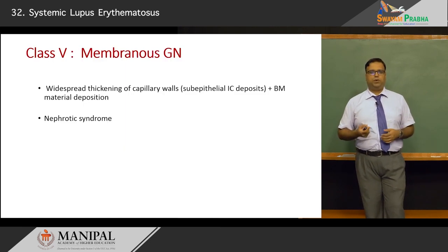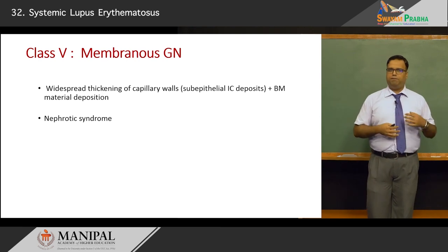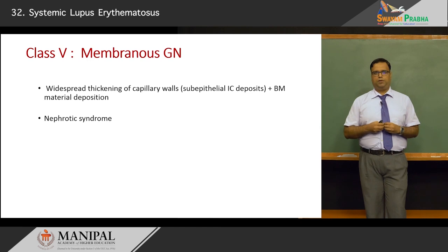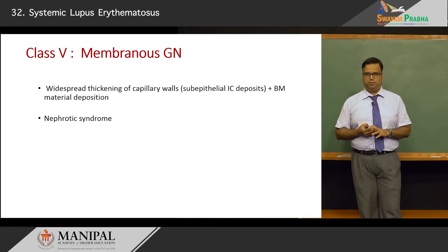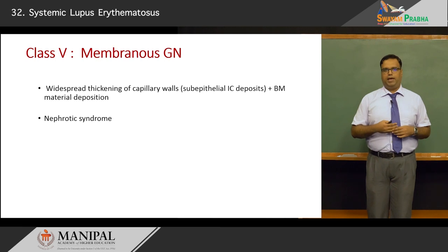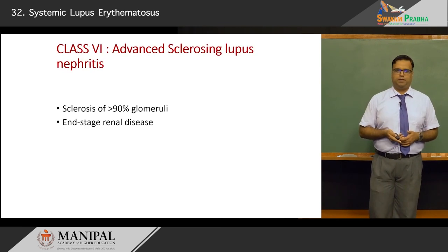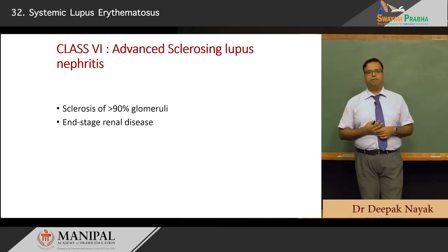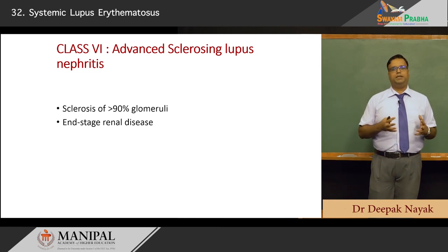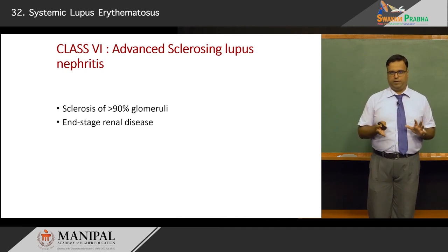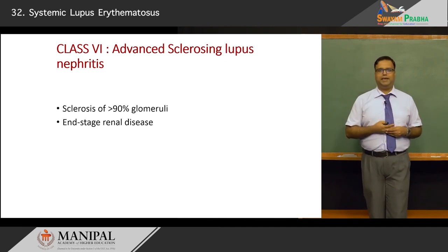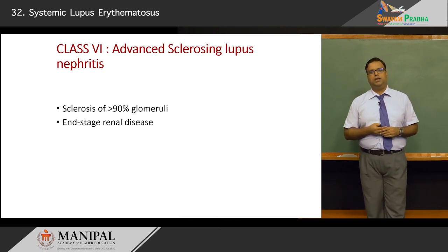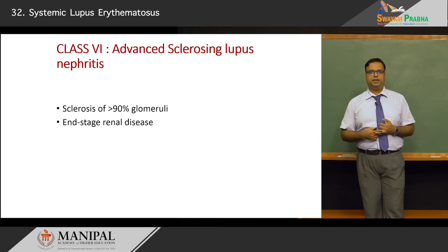Class 5 is membranous glomerulonephritis with widespread thickening of capillary walls and sub-epithelial immune complex depositions along with basement membrane-like material deposition. These patients typically present with nephrotic syndrome, and immunofluorescence suggests SLE. Class 6, the final stage, is advanced sclerosing lupus nephritis, where more than 90 percent of glomeruli have undergone sclerosis and are non-functional. This represents end-stage renal disease (ESRD, also called CKD class 5), requiring hemodialysis or ultimately renal transplant.